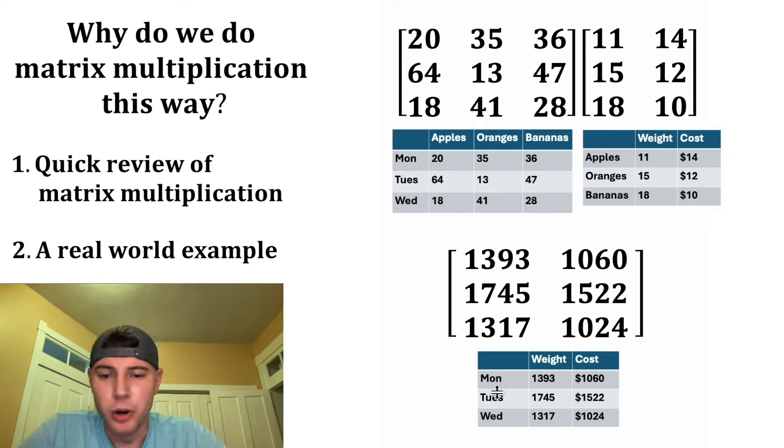And you'll notice the rows of my final answer is the same thing as the rows of the first matrix. And the columns of my answer is the same thing as the columns of the second matrix. And we no longer have it broken down by apples, oranges, and bananas. That all went away. So this is a real world example of why we would multiply this way. I hope it kind of makes a little bit more sense with this example.